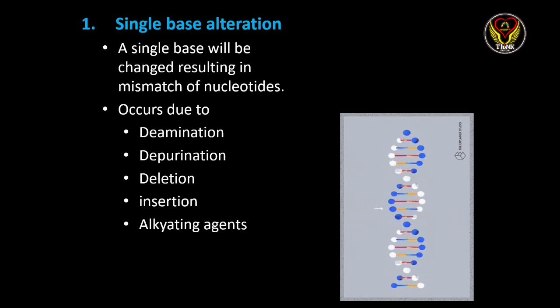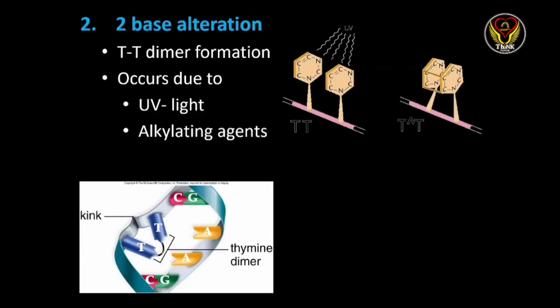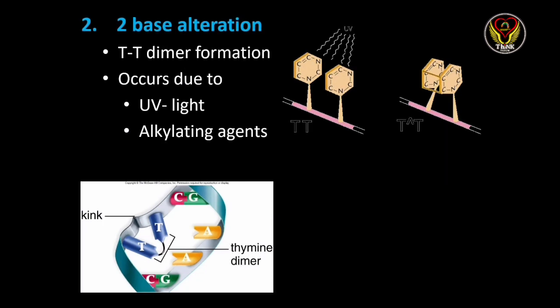Double base alteration is also an identified type of DNA damage. A common example is TT dimer formation — thymine-thymine dimer formation. If two T's are present adjacent to each other in the same strand, sometimes due to external factors like UV light or alkylating agents, these adjacent thymines get bonded and cause a kink formation, as shown in the image. This causes DNA damage.